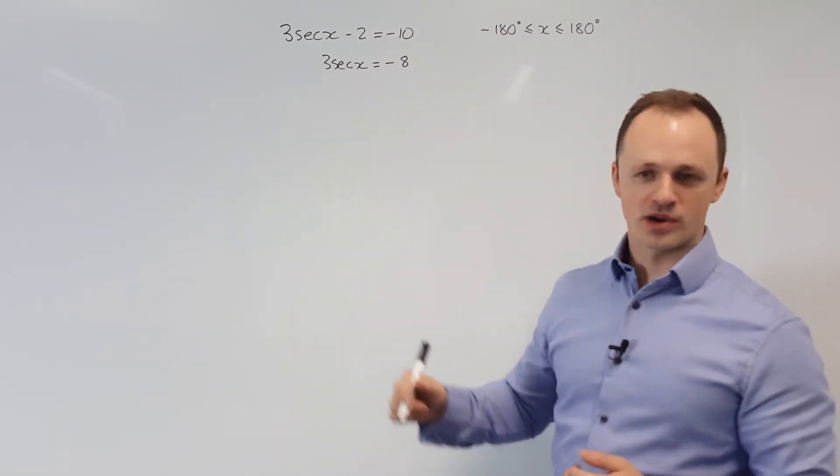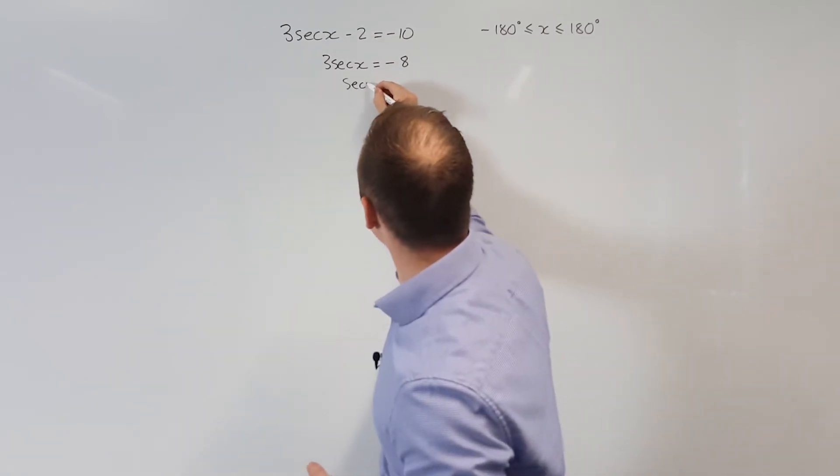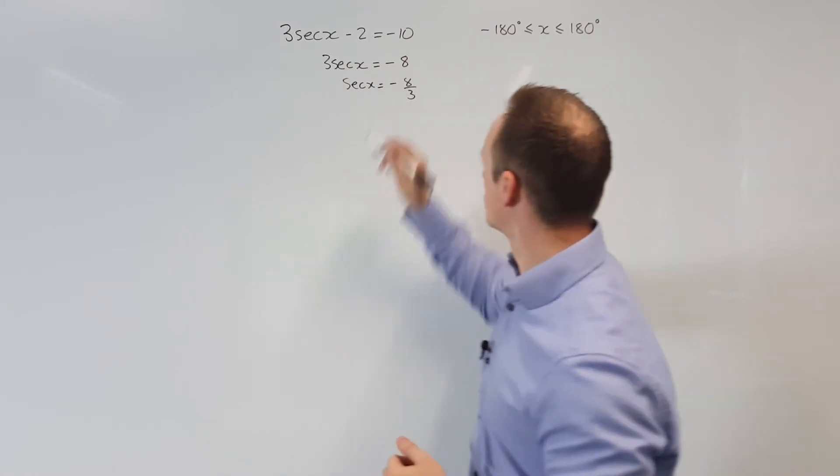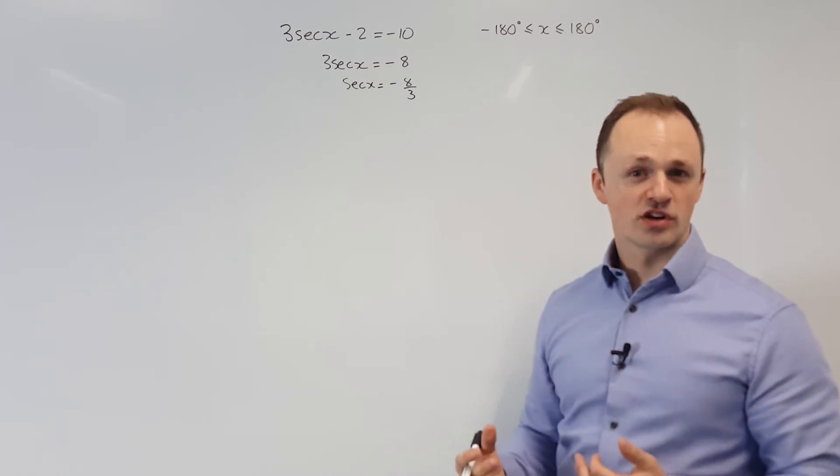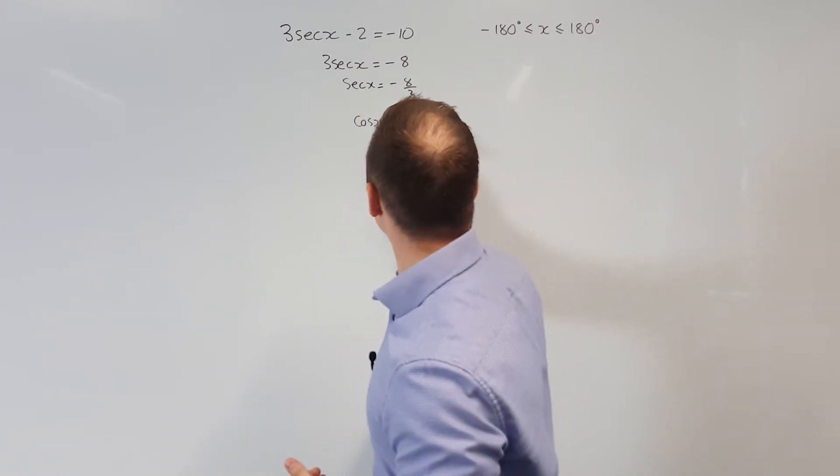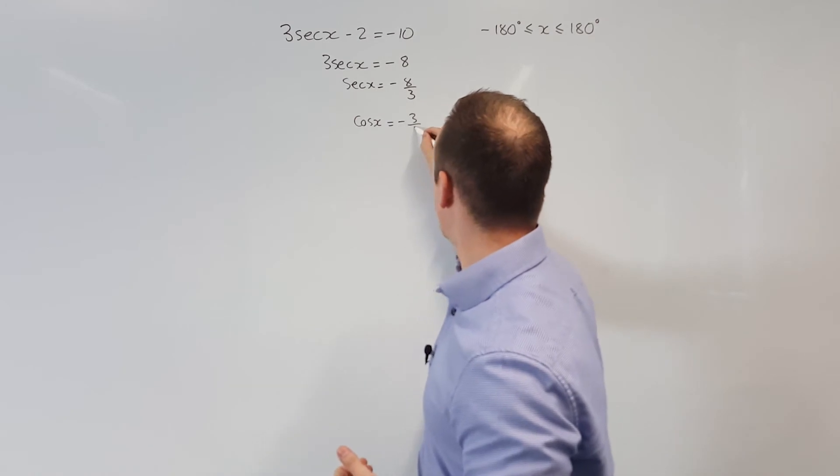Then I'm going to divide through by 3 to get sec x is minus 8 fifths. From here, I'm going to get it in terms of cosine by taking the reciprocal of both sides. So we get cosine of x equals minus 3 eighths.